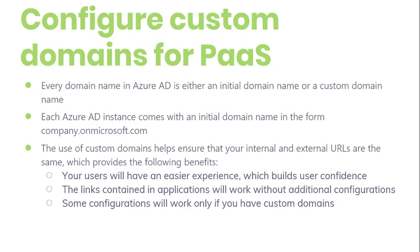To learn more about options if you are not able to use a custom domain, refer to the documentation on translation-aware applications. Some configurations will only work if you have a custom domain. For example, you will need a custom domain for applications to use SAML, such as when you use Active Directory Federation Services. You can also build user confidence — using an onmicrosoft.com domain might be unfamiliar for your users, but a custom domain can help build their confidence when accessing your application.